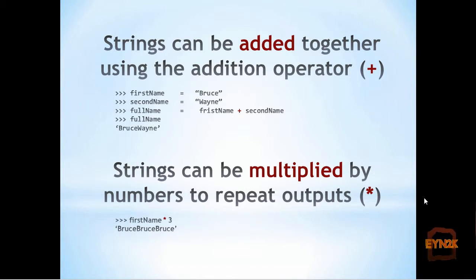In this first example at the top we have string concatenation. We are simply adding two strings together, such as we have Bruce equal to the first variable first name and Wayne equal to the second variable second name. We can add the two variables together such that we get Bruce Wayne.